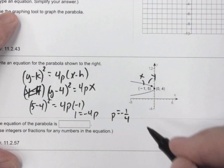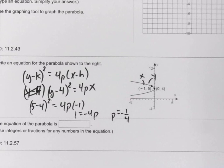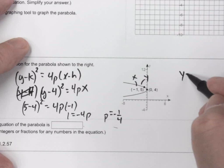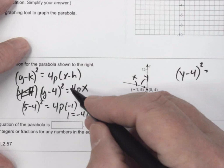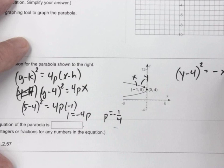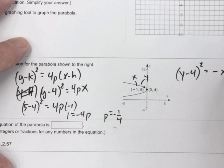So I plug that back in here. Let me put it right over here now. So my final equation of this parabola, 4 times -1/4 is -1. Or I should just be able to put -x. So this should be the equation of that parabola: (y - 4)² = -x.